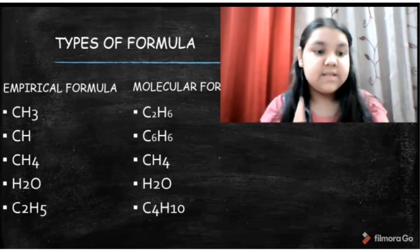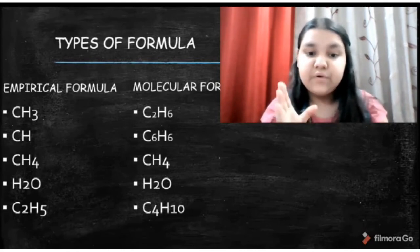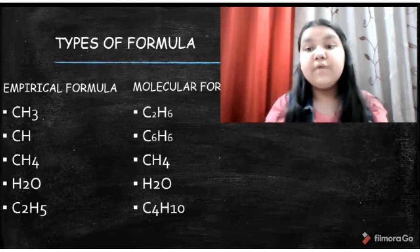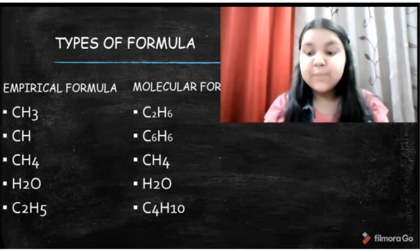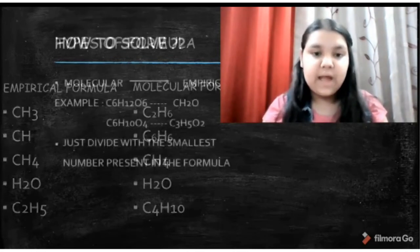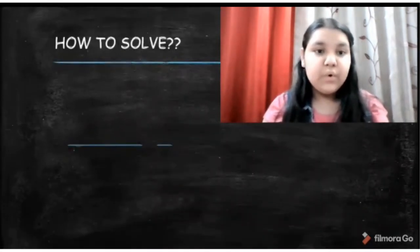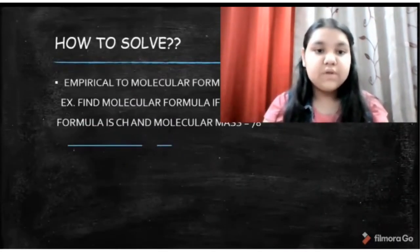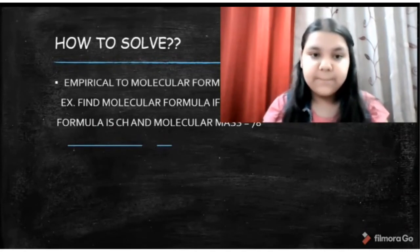In the previous example, C2H5 is the empirical formula and the molecular formula is C4H10. We do the same process to find the answer. Now let us move on to how to convert empirical formula to molecular formula.